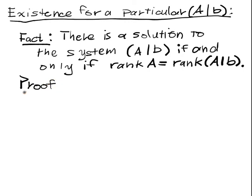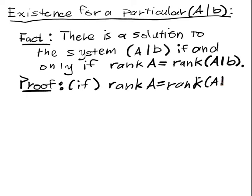When we do a proof for an if and only if type of statement, we have to prove the if part and also the only if part. So the if part is, well, let's suppose that the rank of A is equal to the rank of A given B, and we want to show that we're going to be able to acquire a solution. There is at least one solution.